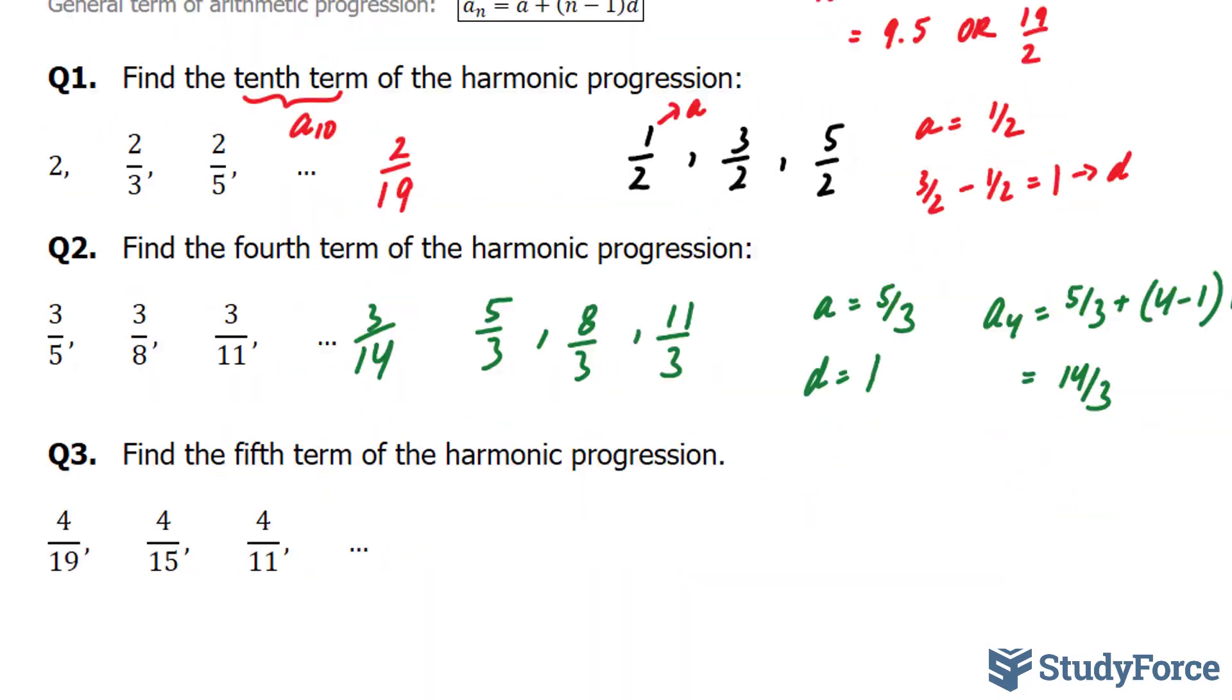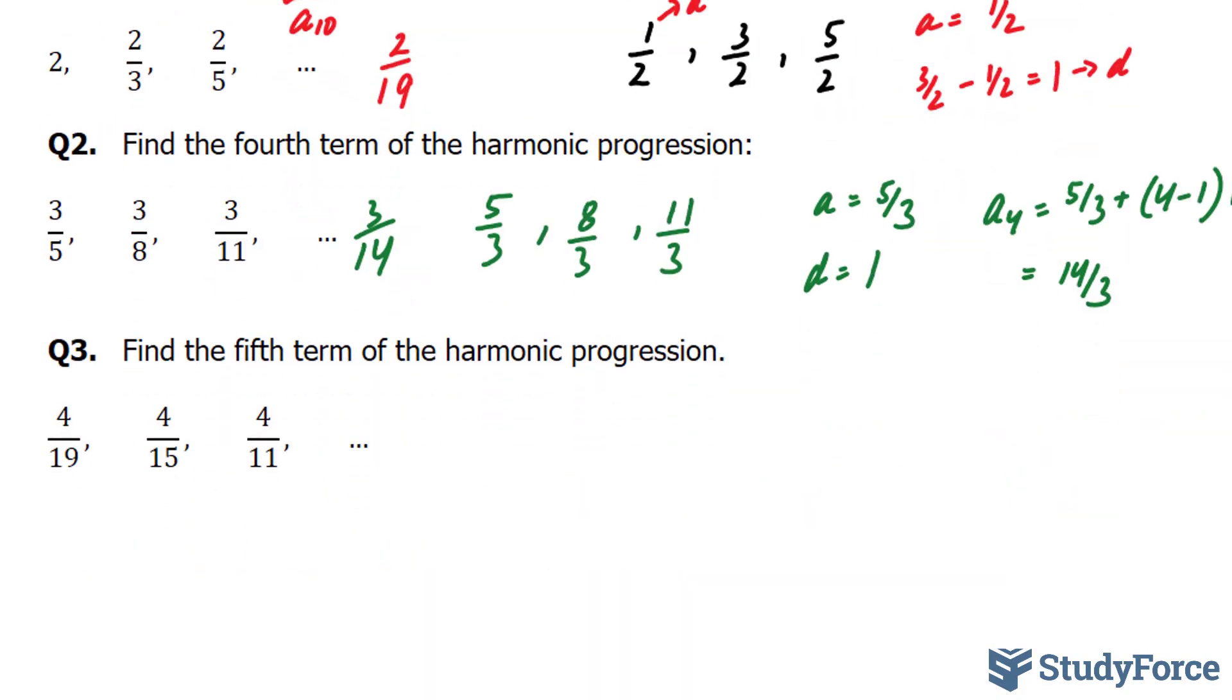Let's move on to question 3. In question 3 they want us to find the fifth term of the harmonic progression. I'm going to take the reciprocal of each of these. This becomes 19 over 4, this becomes 15 over 4, and this becomes 11 over 4.